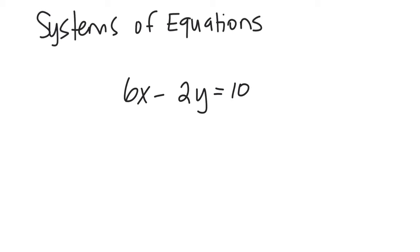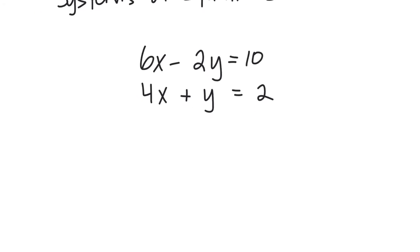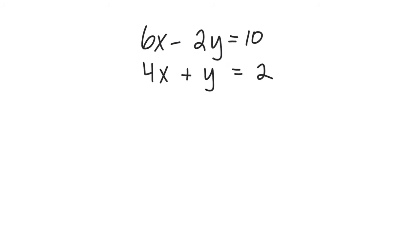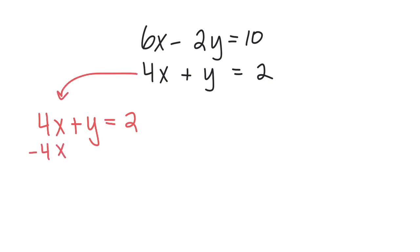And 4x plus y equals 2. The first thing we want to do is get an equation that is just y equals. Looking at that second equation, since y is already by itself, that's the easiest one to rearrange. So with 4x plus y equals 2, we subtract 4x from both sides, giving us y equals negative 4x plus 2.